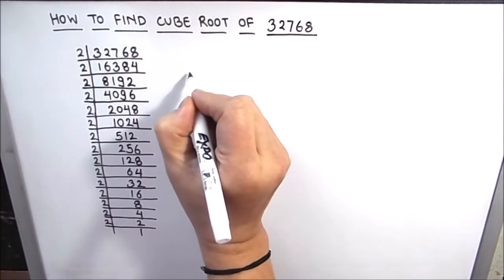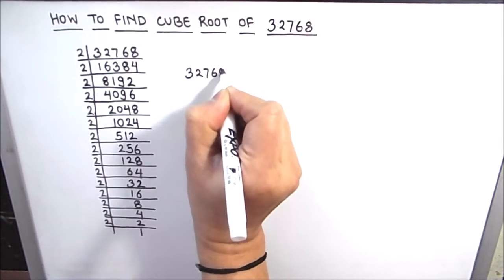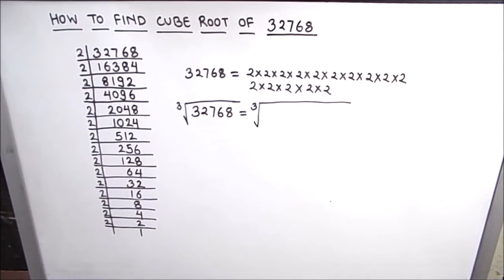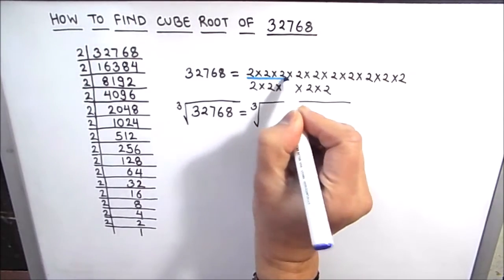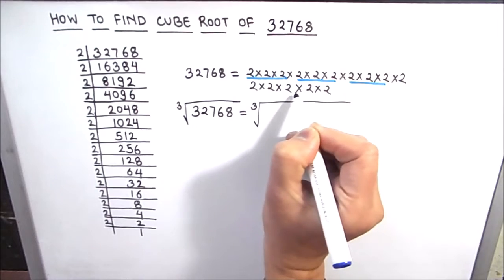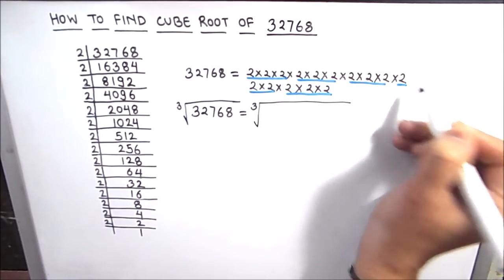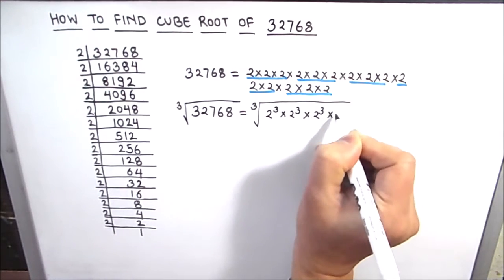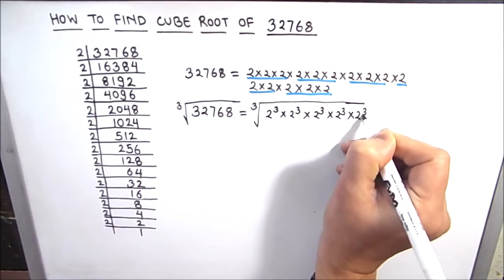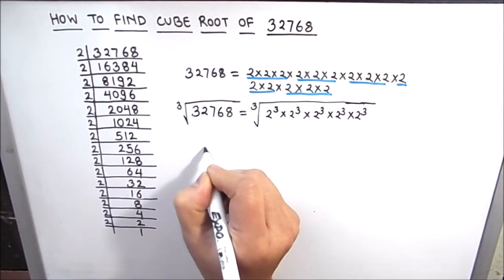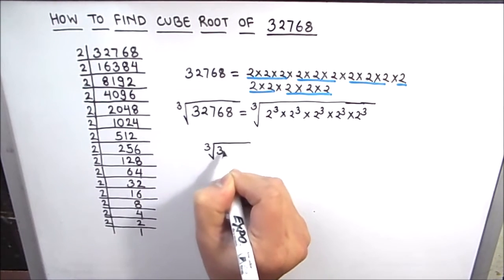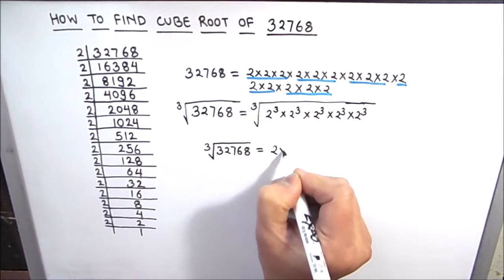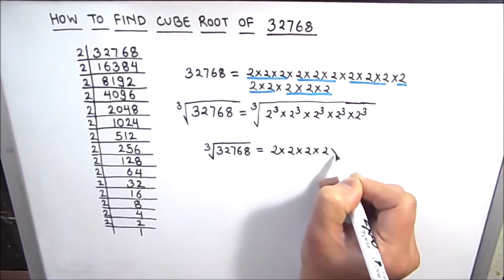We write 32768 as the product of its prime factors. Since we are finding the cube root, we take the cube root on both sides. We can write these 2s grouped as cubes: 1, 2, 3, 4, and 5 — giving us 2 cubed times 2 cubed times 2 cubed times 2 cubed times 2 cubed. Since all factors are in cube form, we can remove the cube root sign, leaving 2 times 2 times 2 times 2 times 2.